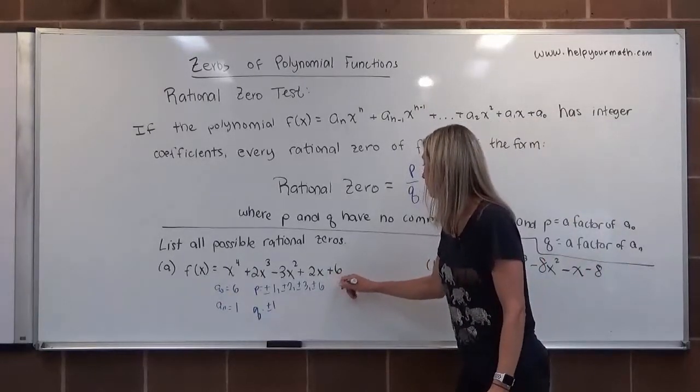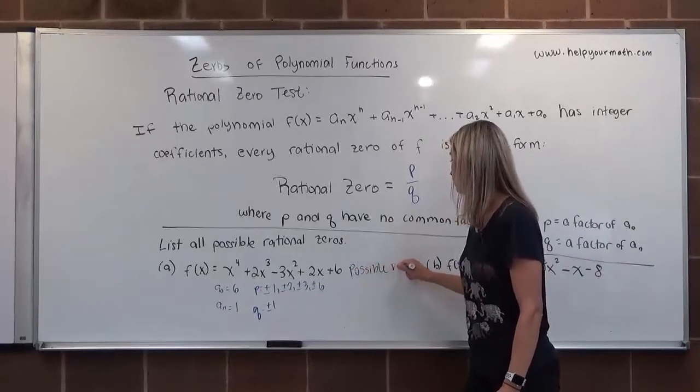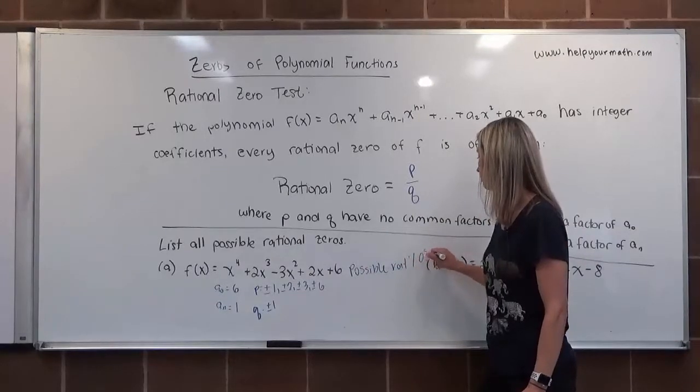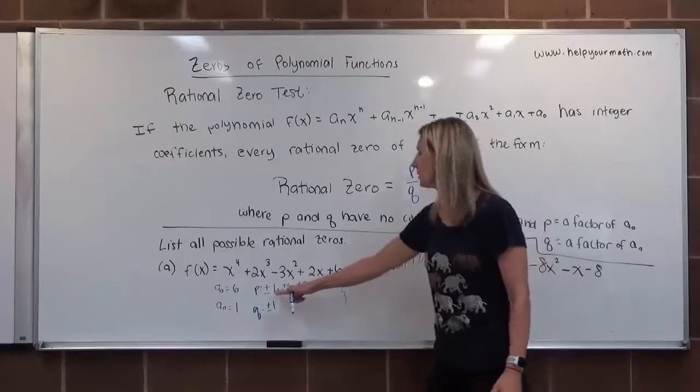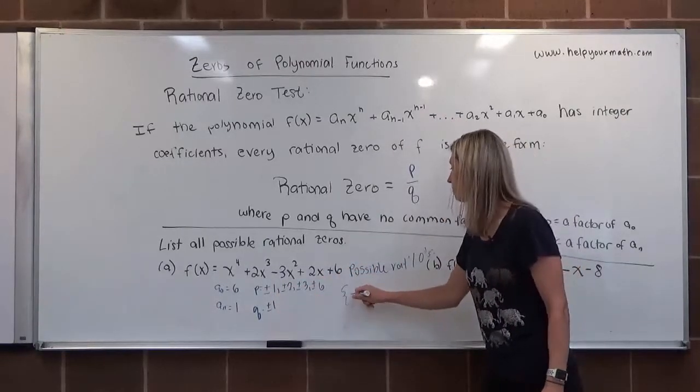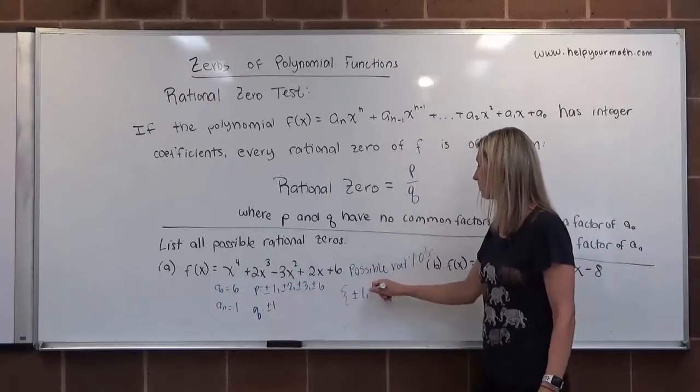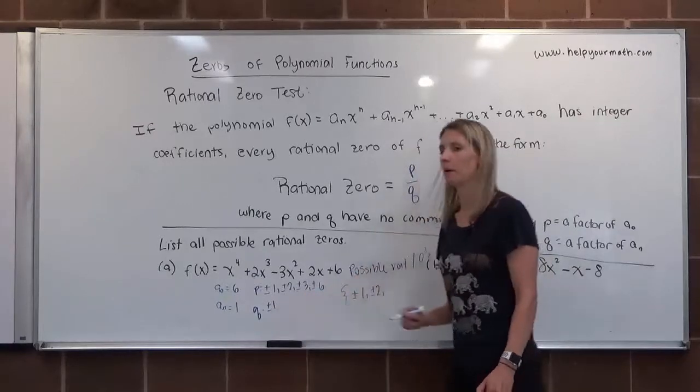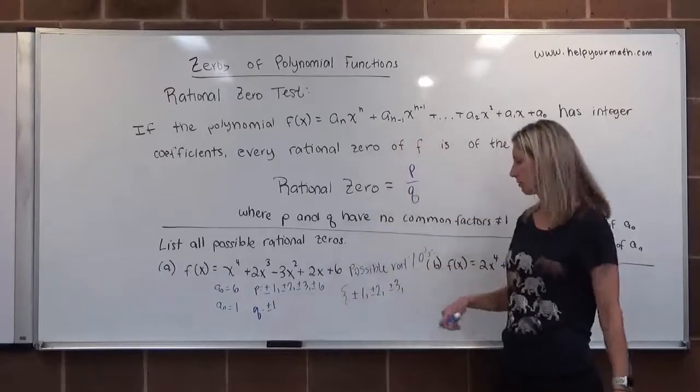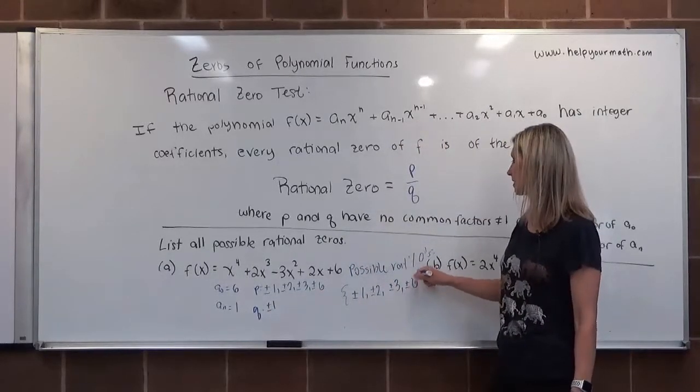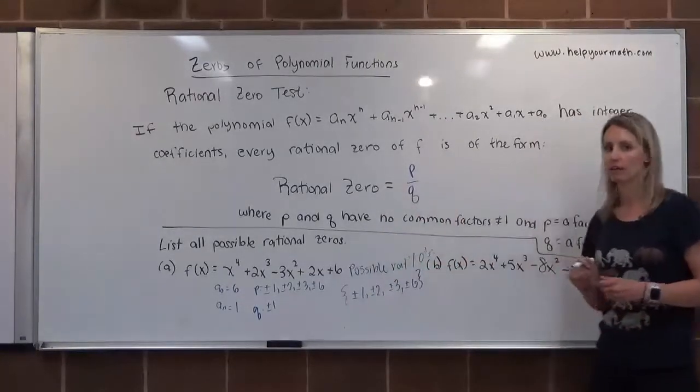Okay, but our possible rational 0s will be, so it's going to be positive or negative 1 divided by positive or negative 1, so we have plus or minus 1. Plus or minus 2 divided by plus or minus 1 will be plus or minus 2. Plus or minus 3 divided by plus or minus 1 will be plus or minus 3. And plus or minus 6 divided by plus or minus 1 will be plus or minus 6. So we have a total of 8 possible rational 0s.